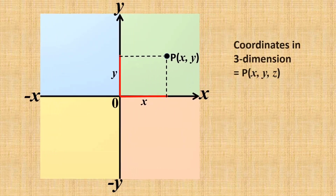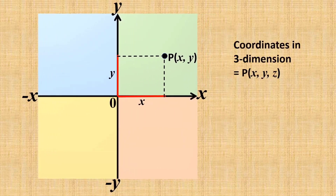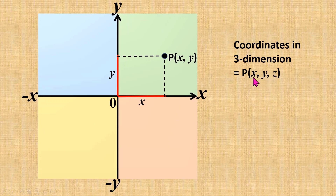Now, in three-dimensional space, the position of a point is represented by using the coordinate system XYZ, where other than X and Y, Z represents the distance of the point from the origin along the Z-axis.